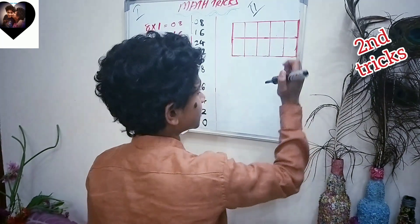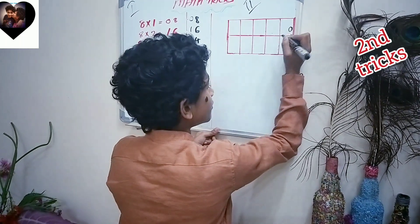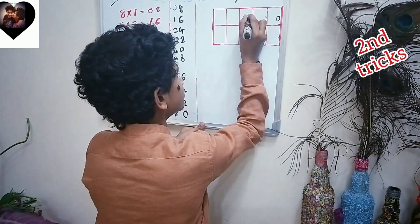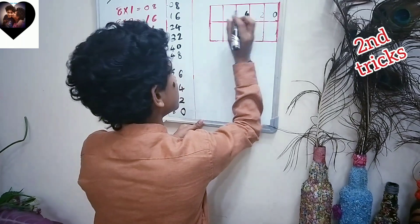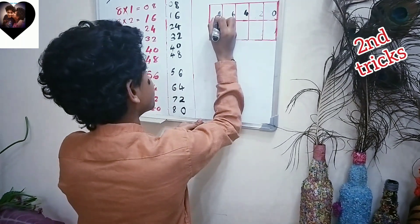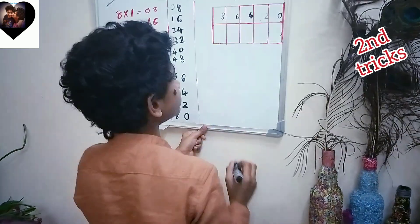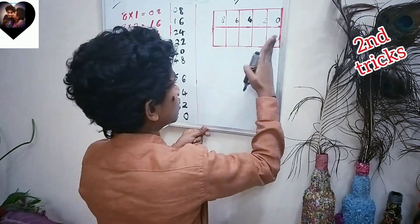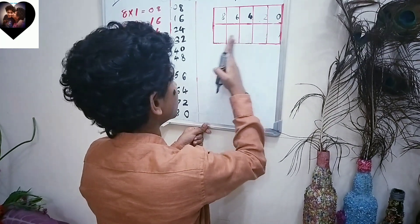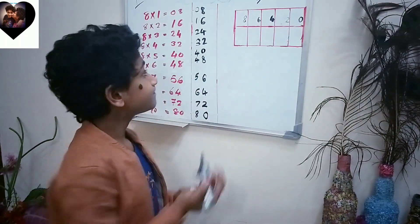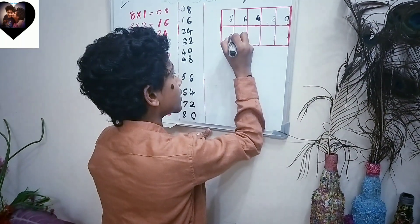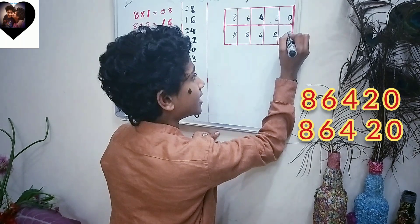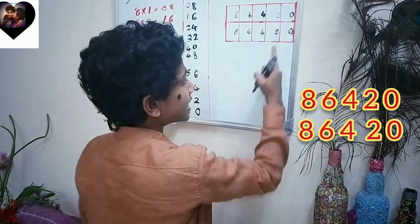So on the right side, write 0. Next column, write 2. Next column, 4. Next column, 6. And the next column, 8. I'm going to do the same thing on the lower one: write 8, 6, 4, 2, and 0.